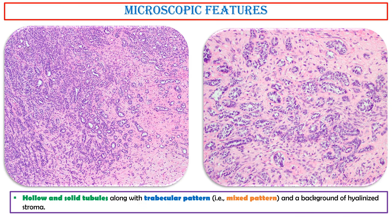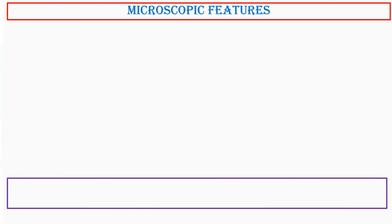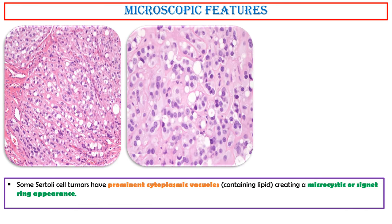These two images show hollow and solid tubules along with a trabecular pattern — that is, a mixed pattern — in a background of hyalinized stroma. Some Sertoli cell tumors have prominent cytoplasmic vacuoles containing lipid, creating a microcystic or signet-ring appearance.